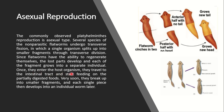Once they enter the host organism, they travel into the intestinal tract and start feeding on partially digested food. Very soon, they break up into small fragments and each single piece develops into a new individual worm.